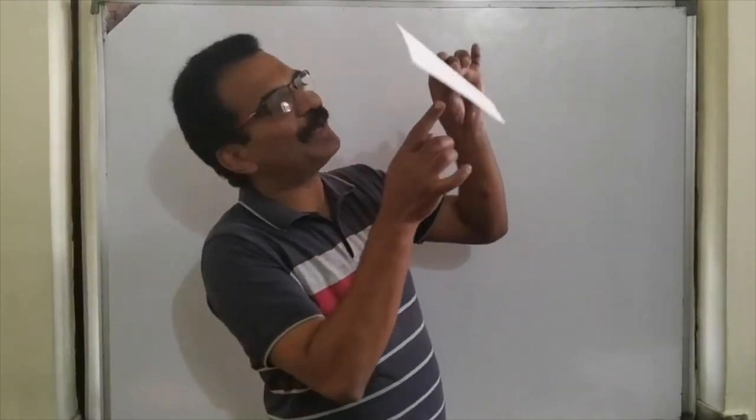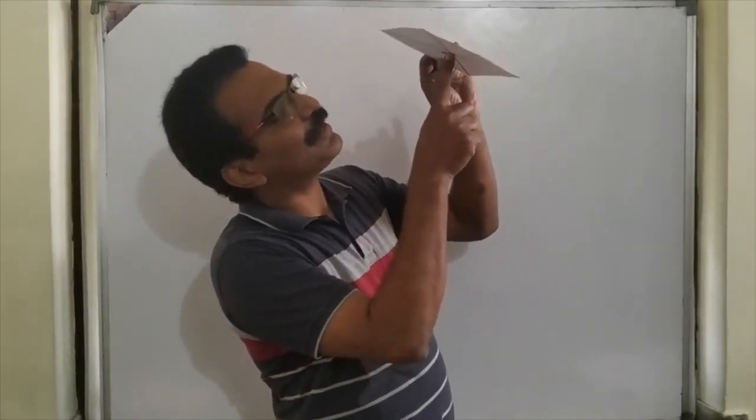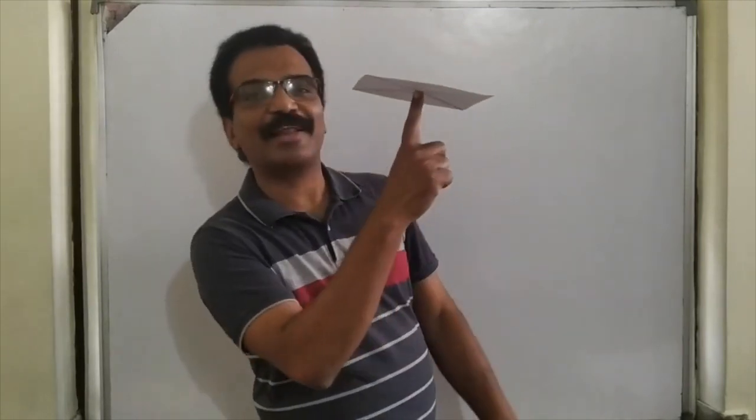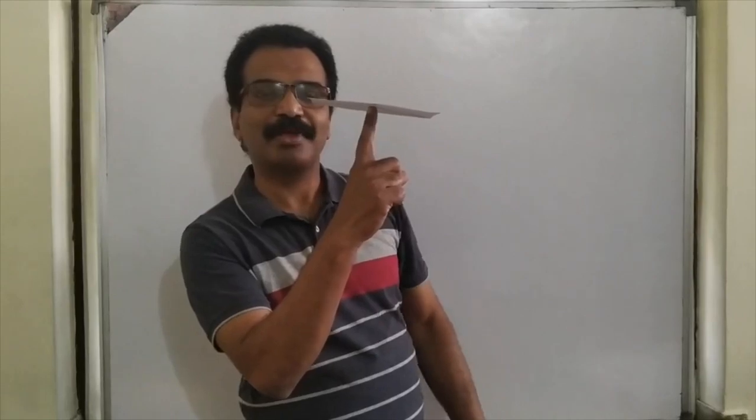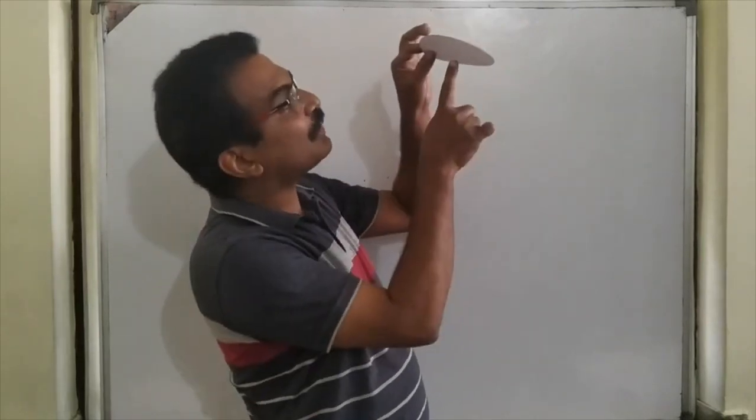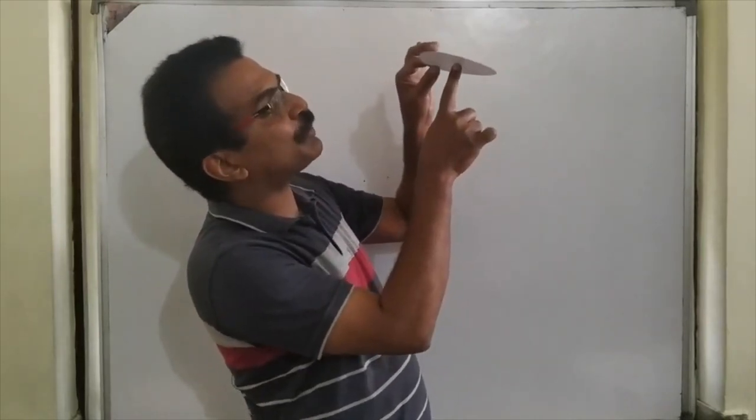This rectangular lamina can be balanced like this. If I ask you to find the position of the circular gravity of a circular lamina, you will say that geometric center of the circular lamina is the position of central gravity.